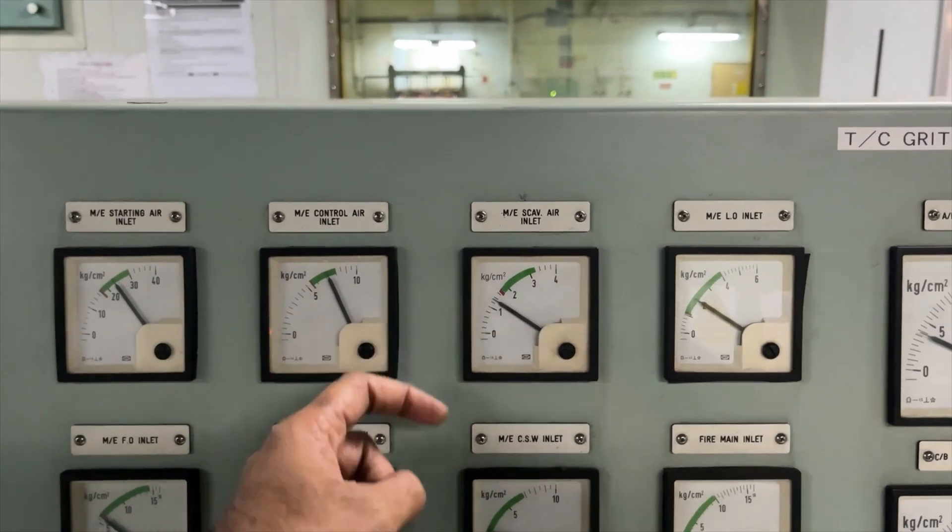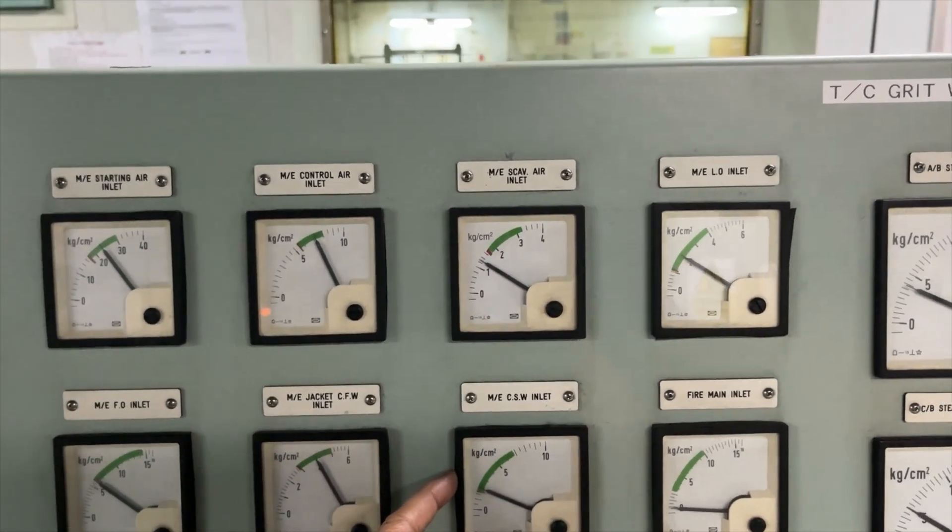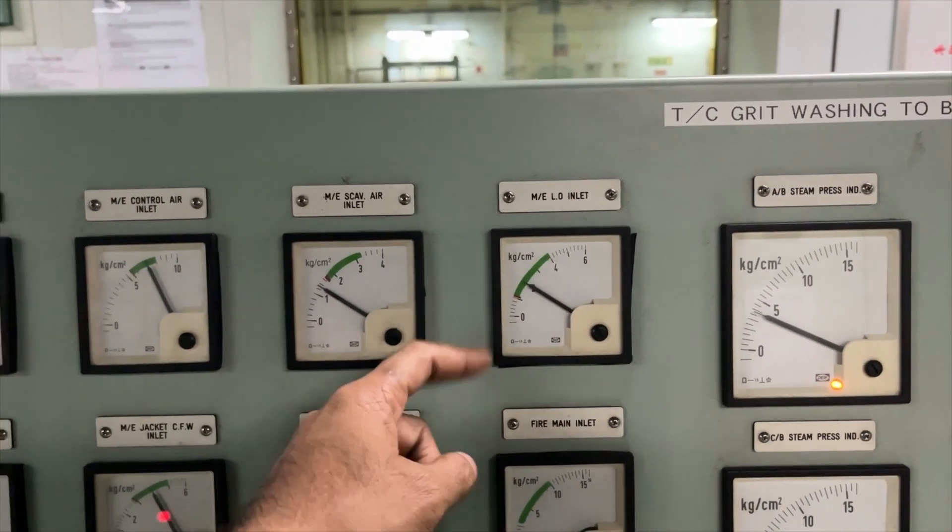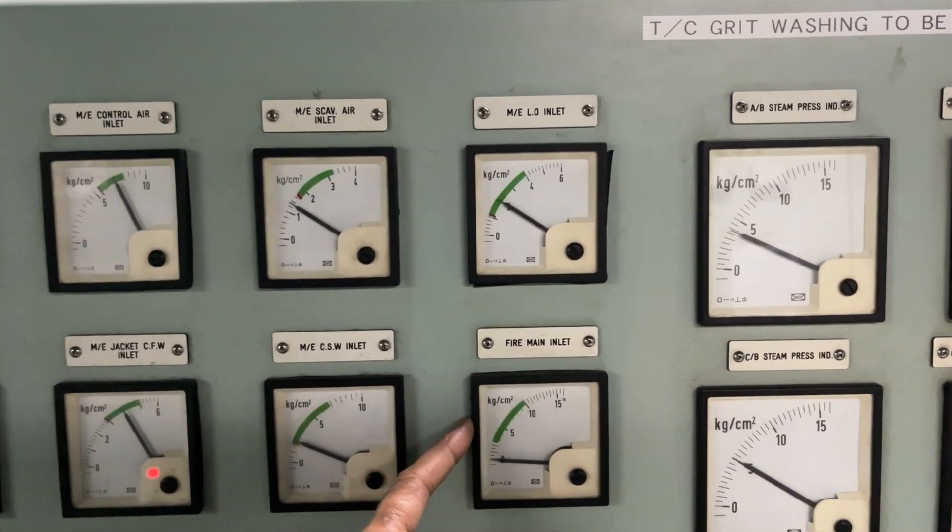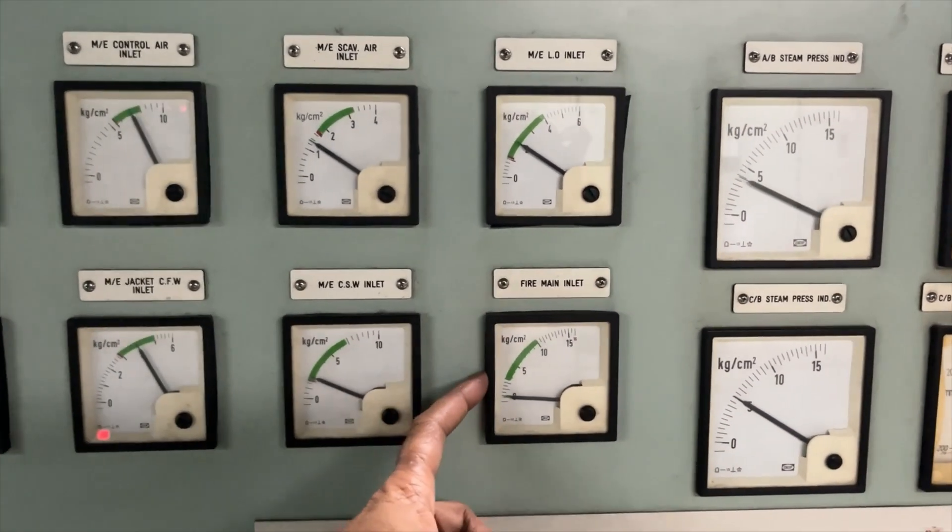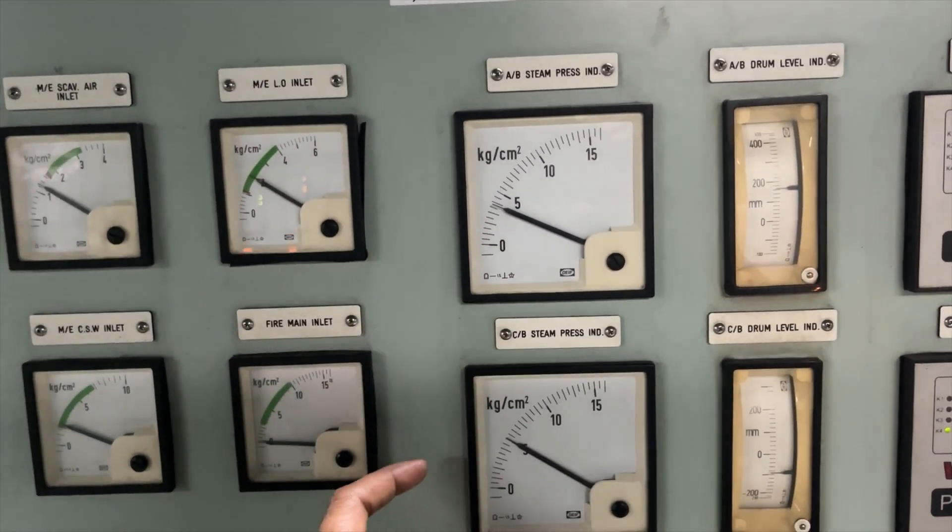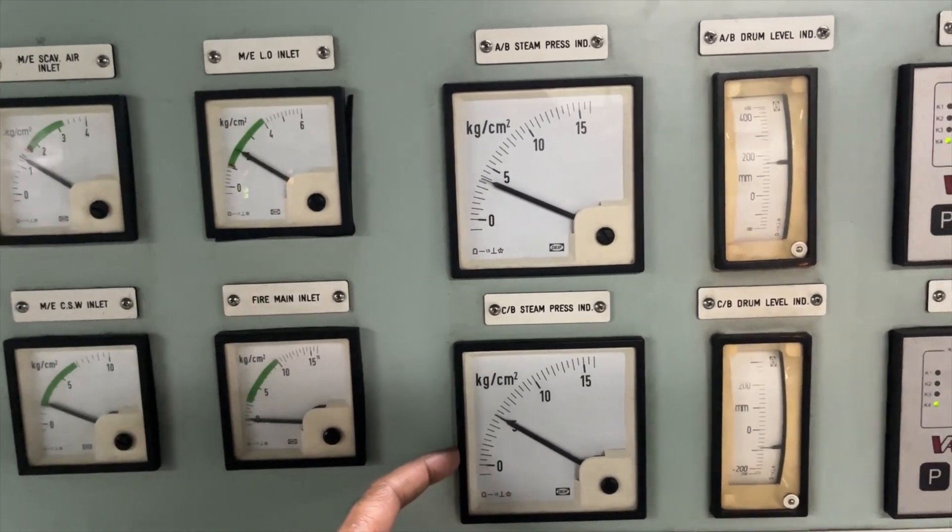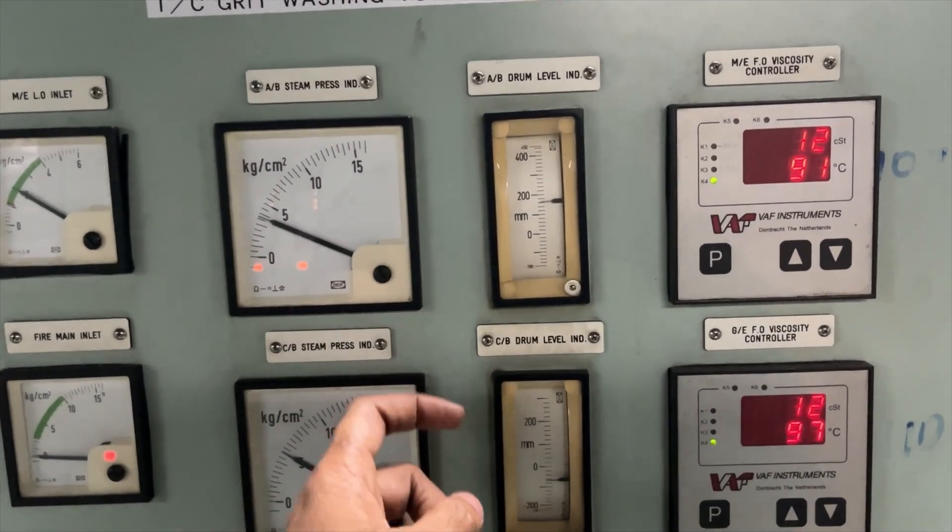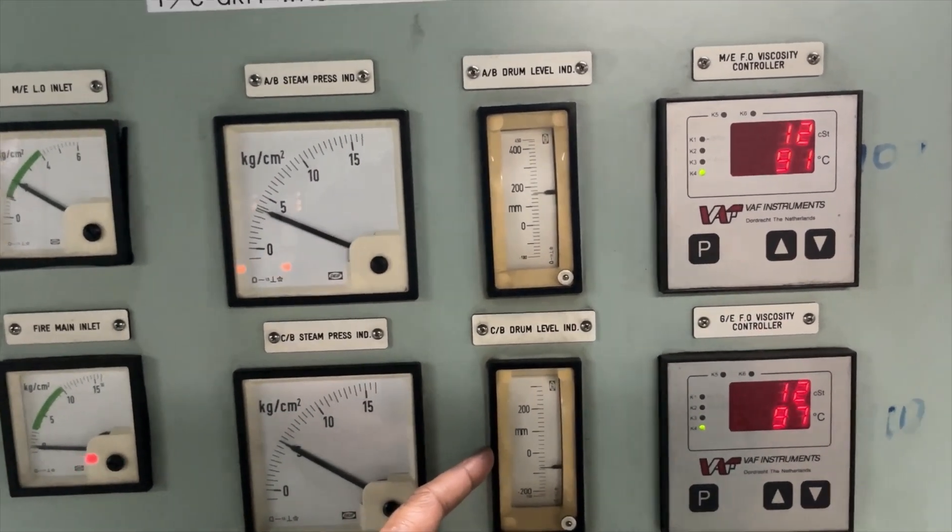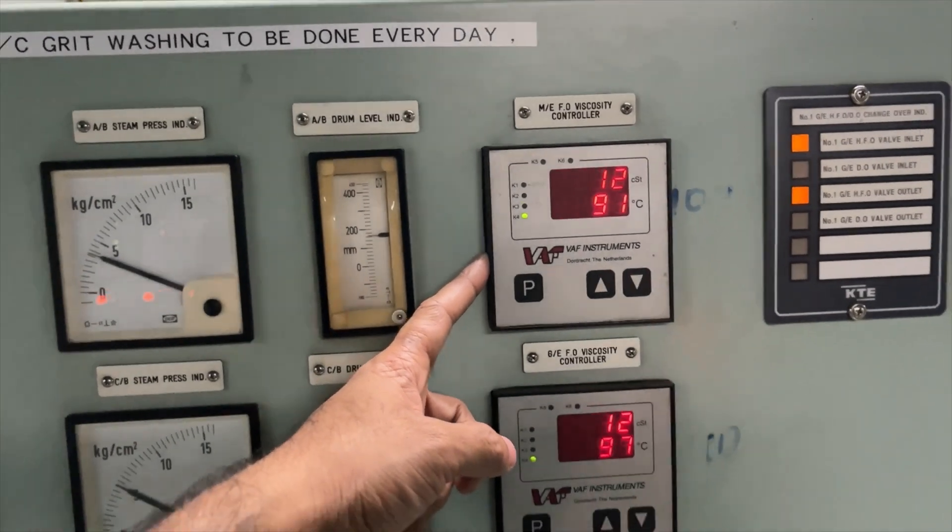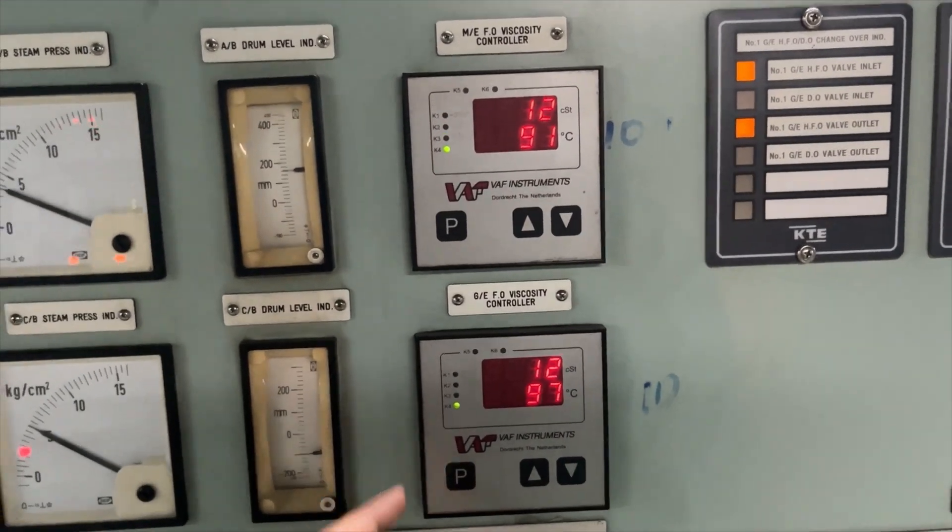Main engine scavenge air inlet pressure, main engine cooling sea water inlet pressure, main engine lube oil inlet pressure, fire main line. Right now it is stopped, boiler steam pressure indicator, composite boiler steam pressure indicator, main boiler and composite boiler water level indicator and main engine fuel oil viscosity and generator fuel oil viscosity.